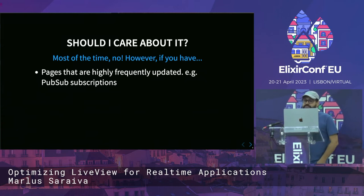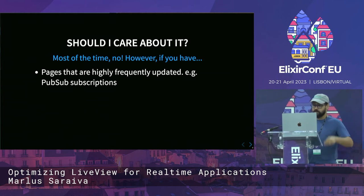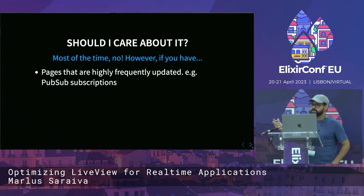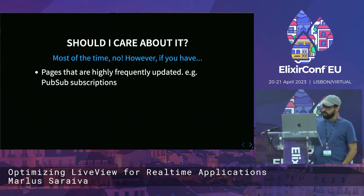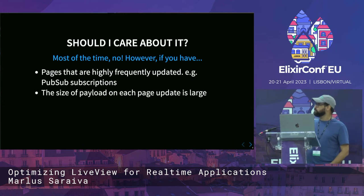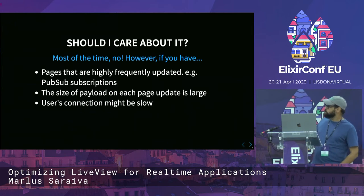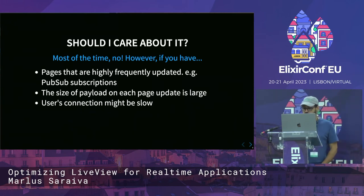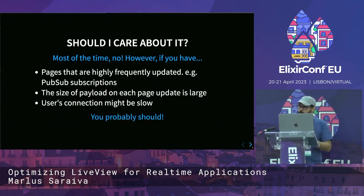However, if you have applications with pages that are highly frequently updated — for instance, because you're subscribing to a bunch of PubSub topics — or maybe the size of the payload on each of those updates is large, or maybe some users have slow connections, or even all of them — then you probably should care about optimizing your application.